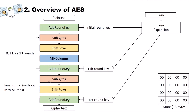Here you can see the same building blocks repeating. The key expansion takes a key and expands it to different so-called round keys. We have 9, 11, or 13 rounds in the middle, and one additional round. This is based on the key length: with 128-bit we have 10 rounds, with 192-bit we have 12 rounds, and with 256-bit key size we have 14 rounds. In the last round, the mix column step is missing.